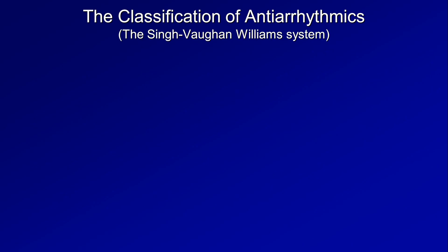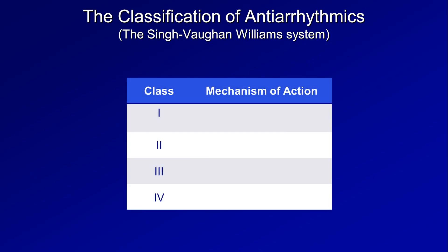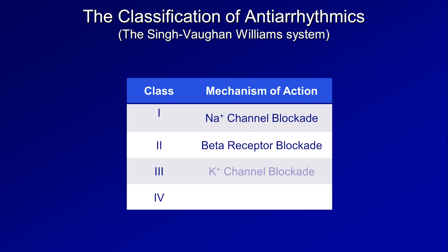The system divides antiarrhythmics into four classes depending upon their primary mechanism of action. Class 1 consists of sodium channel blockers. Class 2 are beta receptor antagonists, more commonly known as beta blockers. Class 3 are potassium channel blockers, and class 4 are calcium channel blockers. Class 1 was subsequently subdivided into three subclasses — 1A, 1B, and 1C — the differences between which I'll discuss in the next video.